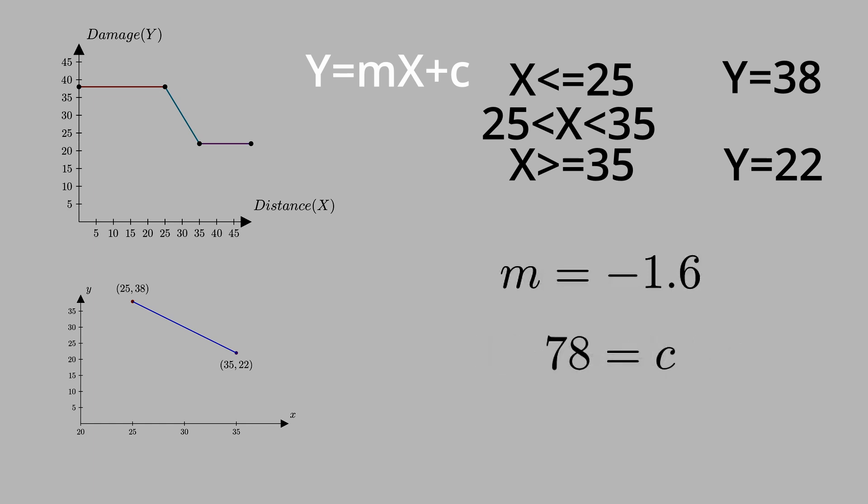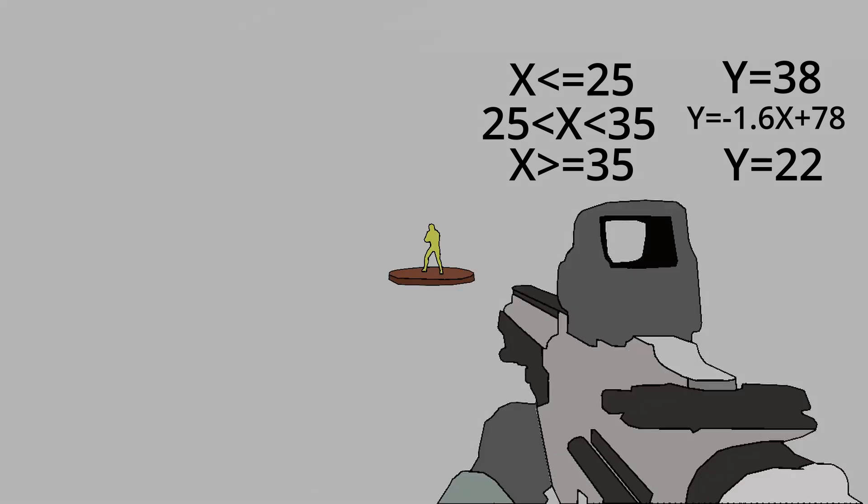And now we have an equation to record the damage between 25 and 35 meters. When a bullet is fired from 15 meters, it does 38 damage. From 100 meters, it does 22 damage. From 27 meters, it does 34.8 damage. This method is relatively simple compared to the next method.